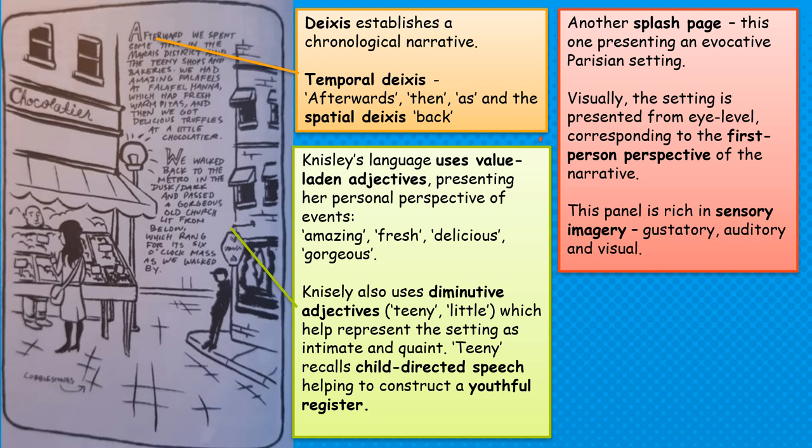In the text accompanying this panel, the deixis is establishing a chronological narrative. There's temporal deixis — 'afterwards,' 'then,' and 'as' — and the spatial deixis 'back,' suggesting this is part of a journey, part of their day travelling around and returning at the end of the day. Nisley is using a lot of value-laden adjectives — adjectives that present a personal opinion and a personal perspective, particularly about the food she eats: 'amazing,' 'fresh,' 'gorgeous.'